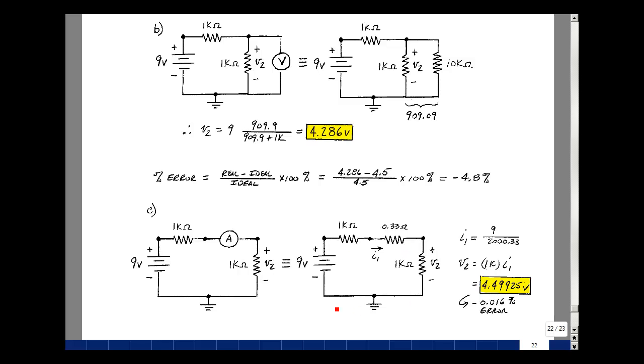Let's calculate the current that's going to flow in this circuit. It'd be the 9 volts divided by the sum of the resistances which would be 2,000.33. So the voltage across here then would be the 1,000 times the current and that's 4.49925.